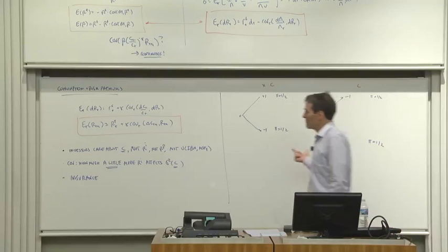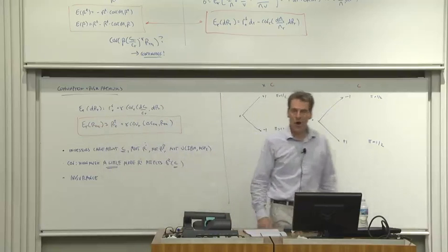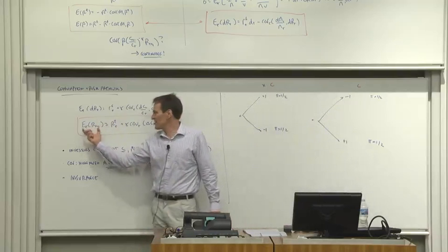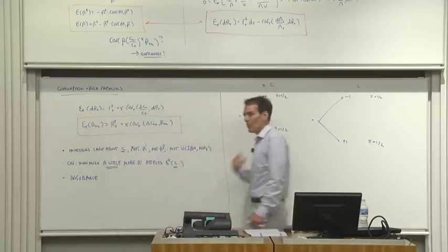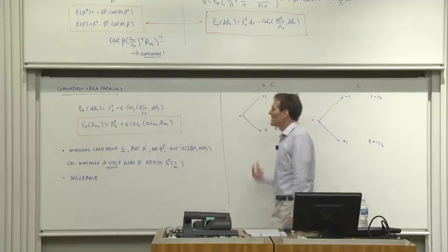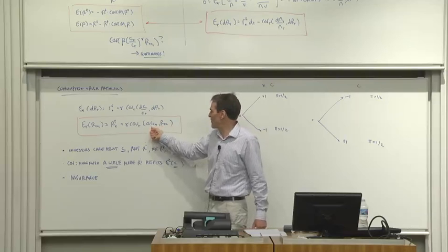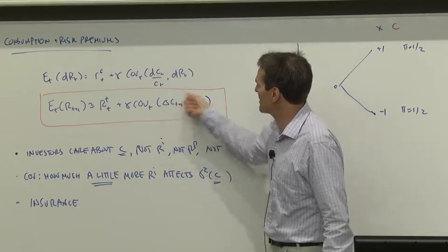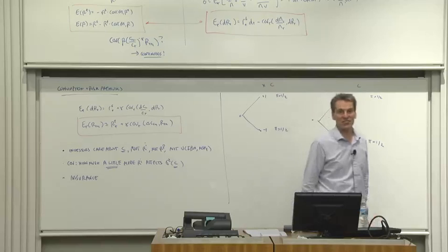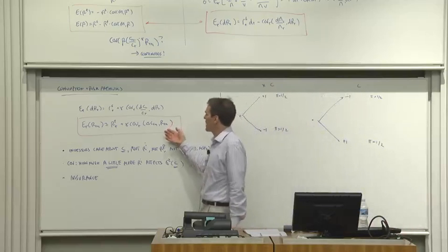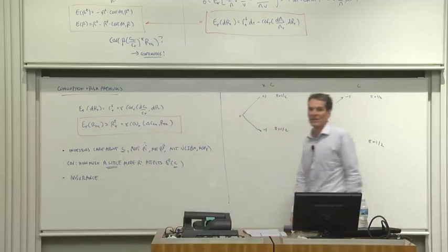As an example: you might well buy securities with terrible expected returns. Car insurance is a security with a terrible expected return — you pay them more than they pay you. Why hold it? Because they pay you on days when your car just got stolen, when your consumption is terrible. Their payment is negatively correlated with consumption growth. Conversely, most securities pay well when you're already doing well, which is why you require a high risk premium to be forced to hold them.